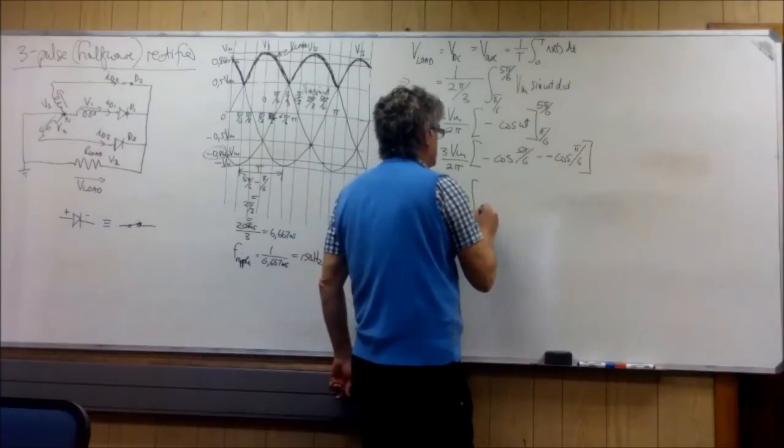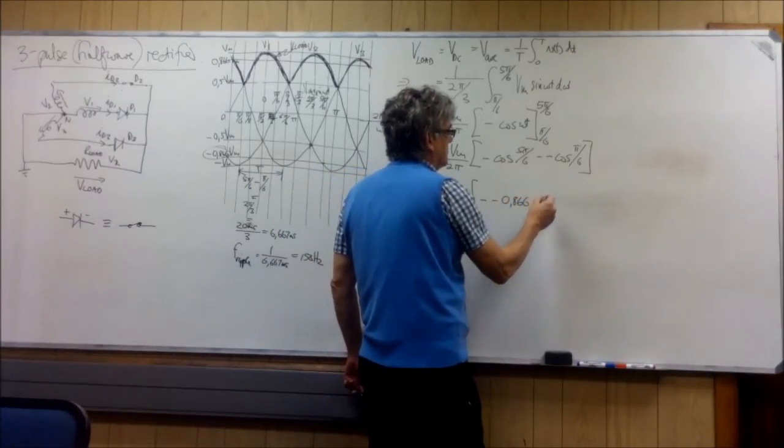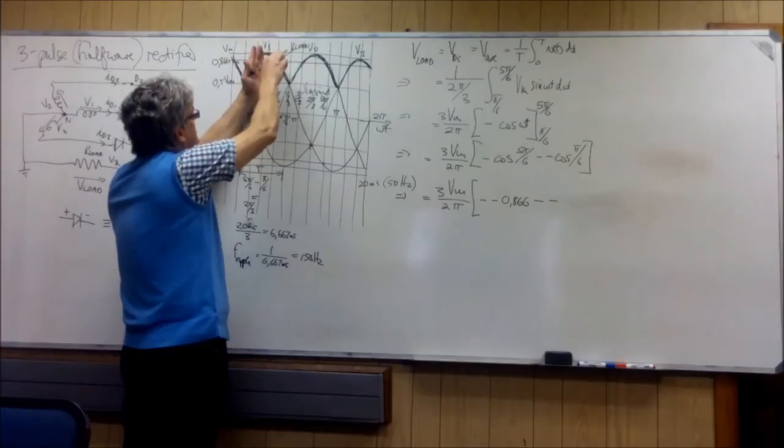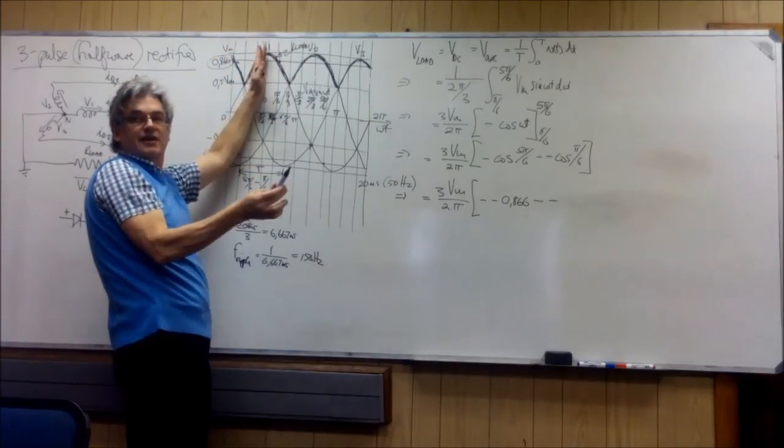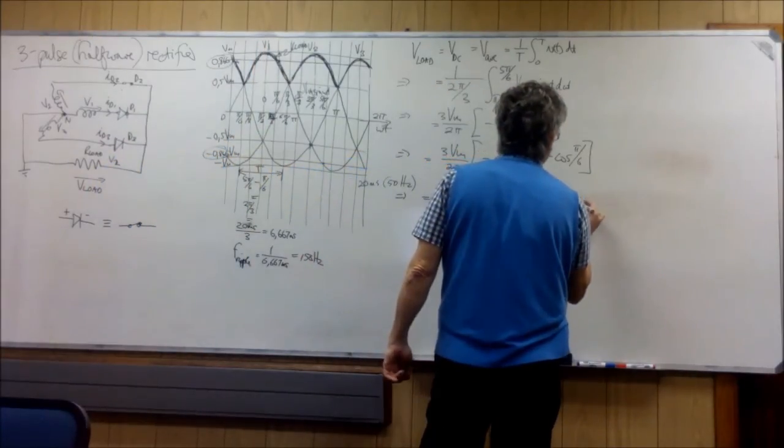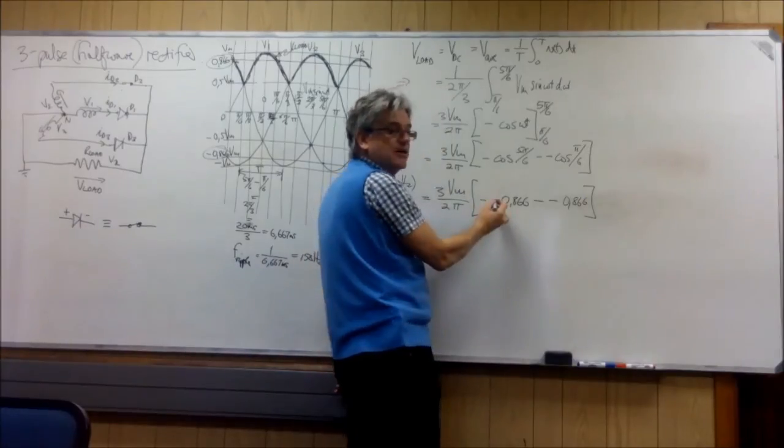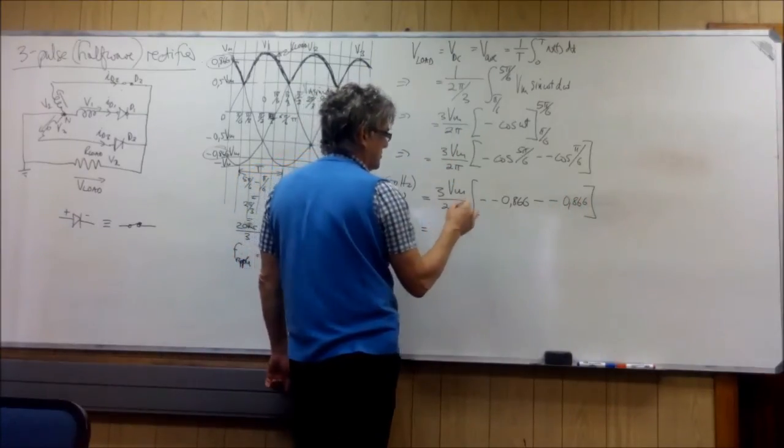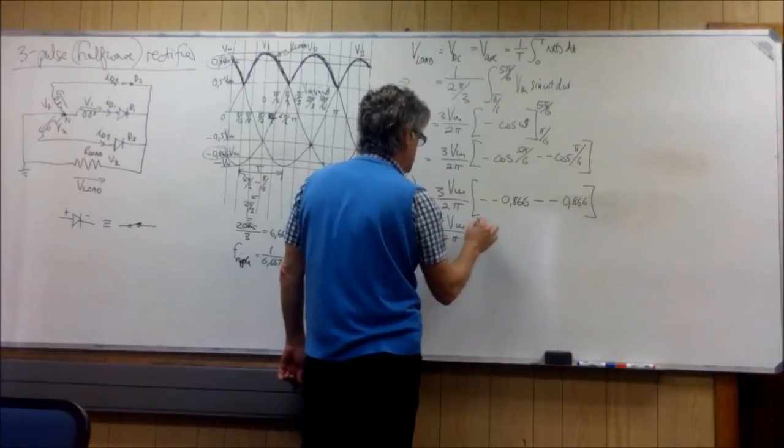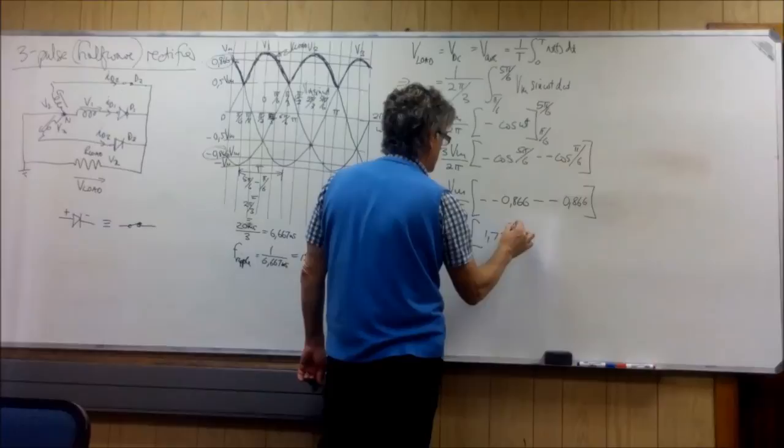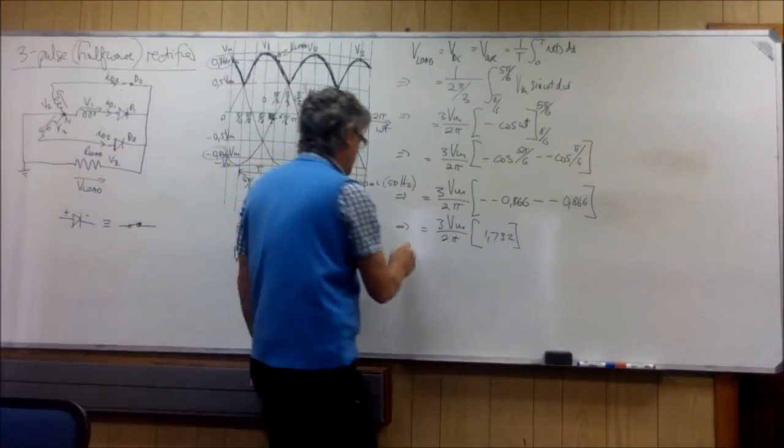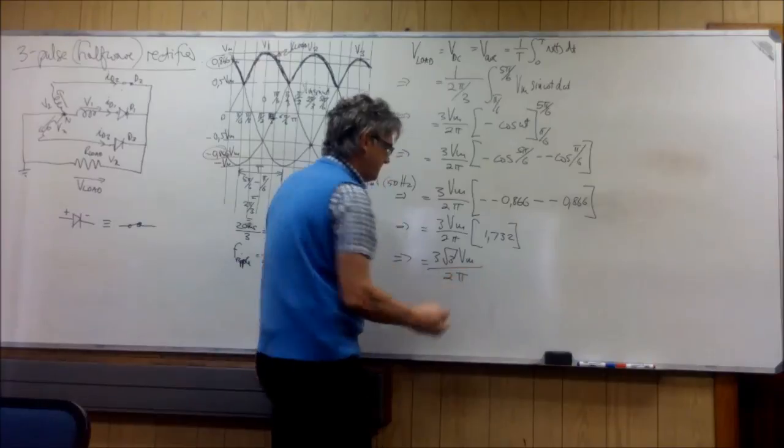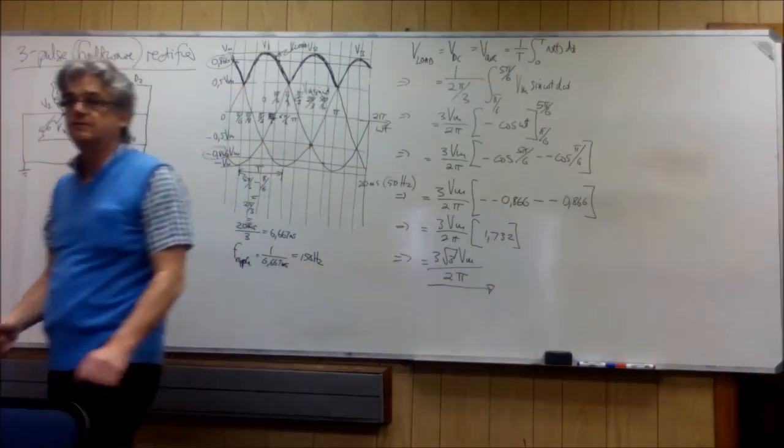Okay, so it's minus minus 0.866 minus minus the cos of, let's do this here, the cos of π/6. There is 1, there is 0.866. So you didn't even need a calculator. So we have minus times a minus is a plus, minus times minus is a plus, 0.866 plus 0.866 is 1.732. And 1.732 is the square root of 3.